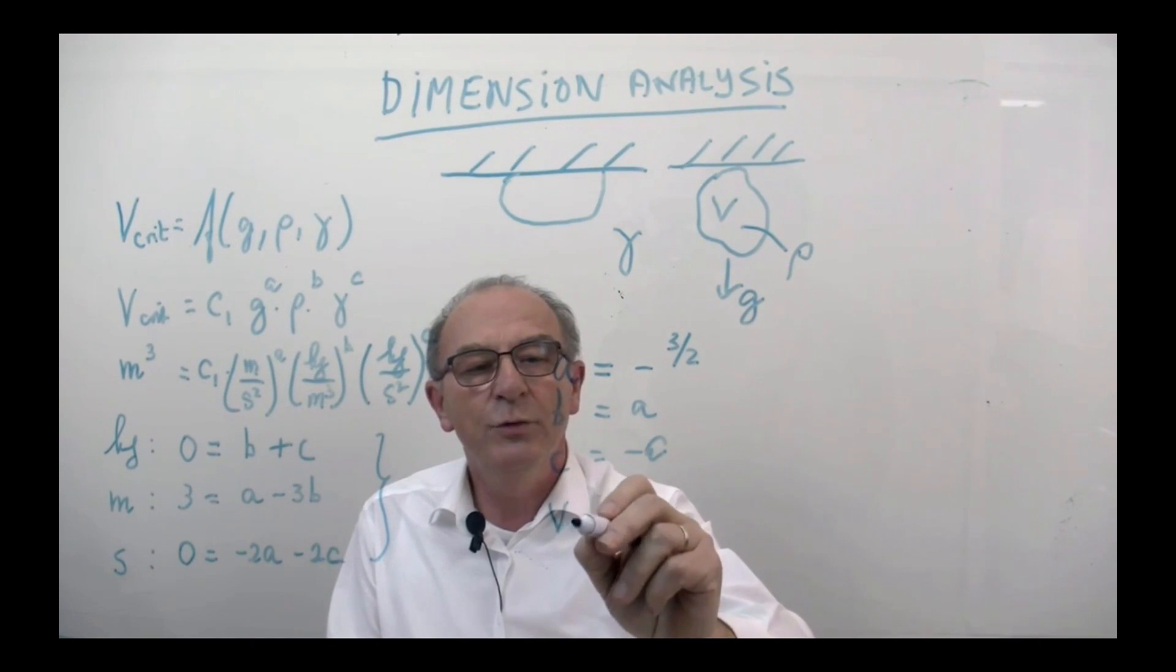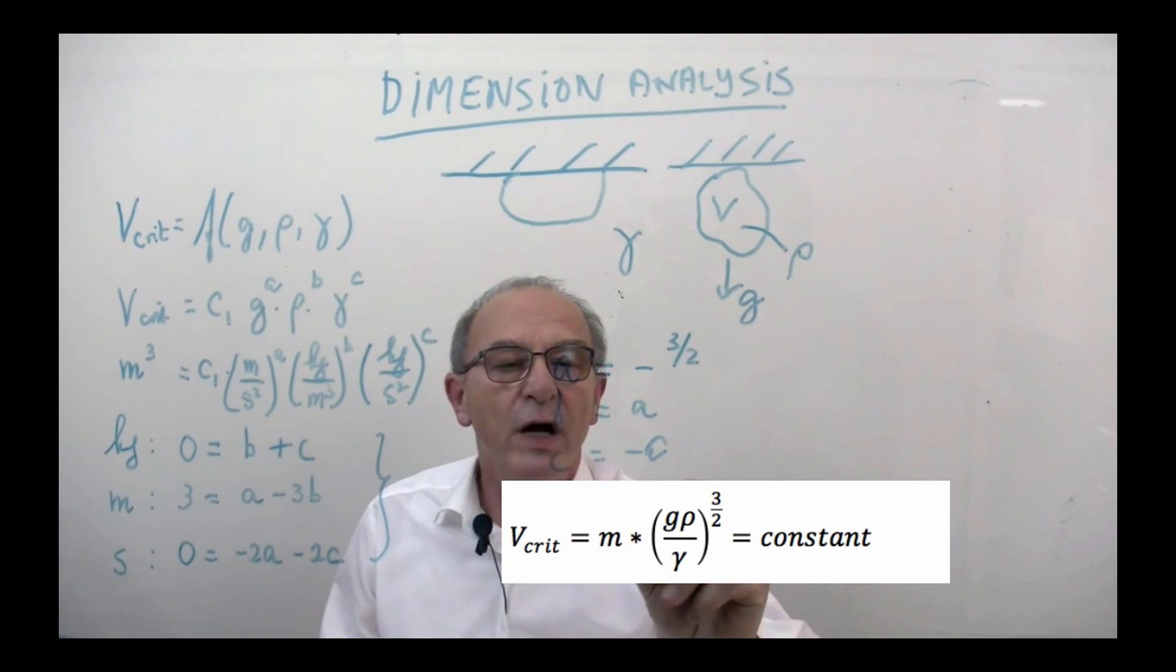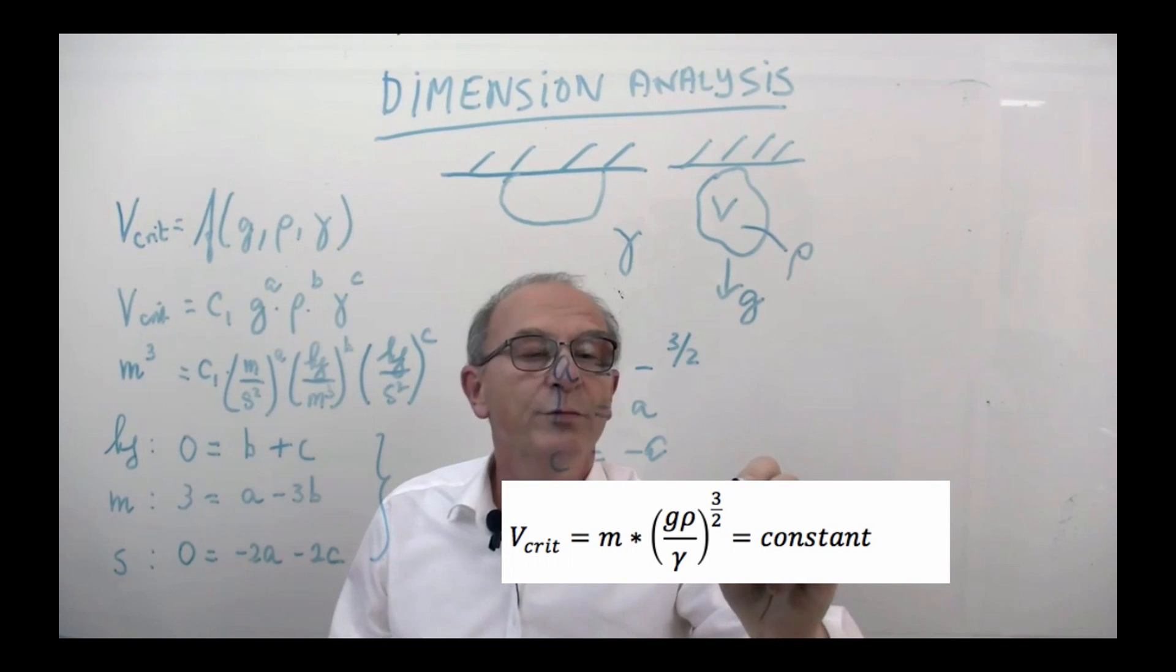V critical divided by the density, gravity constant, and the surface tension, to the power three halves is constant.